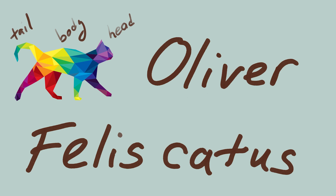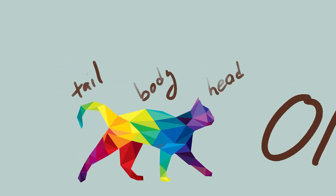Together, they make the length of a cat. Oliver the cat has a 30cm long tail that he's very proud of. He has a small, round head with sensitive, clever whiskers.